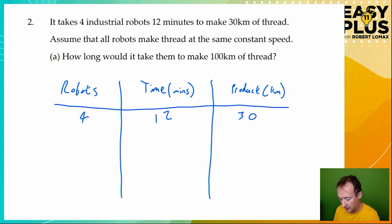So we know that four robots take 12 minutes to make 30 kilometers of thread. How long would it take them to make 100 kilometers of thread? So we've got them in the question. That must mean the four robots. So we're going to keep the number of robots the same, and that means it's the other two things that are going to change. Now we don't know the time. That's what we're looking for. So we're going to have to change the length. So to get from 30 kilometers to 100 kilometers, we times by 3 and a third. That's a little bit fiddly. If we do it in stages, we can just work with whole numbers.